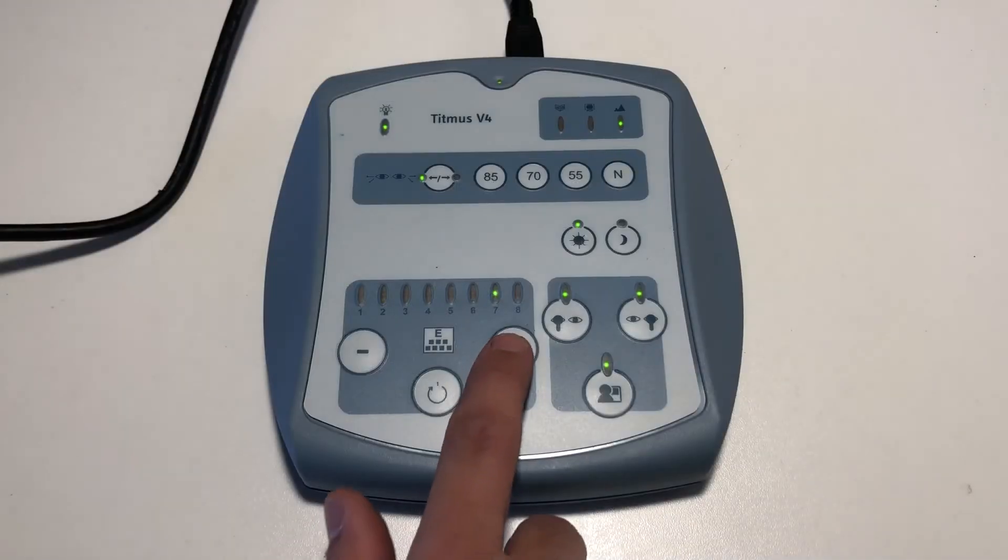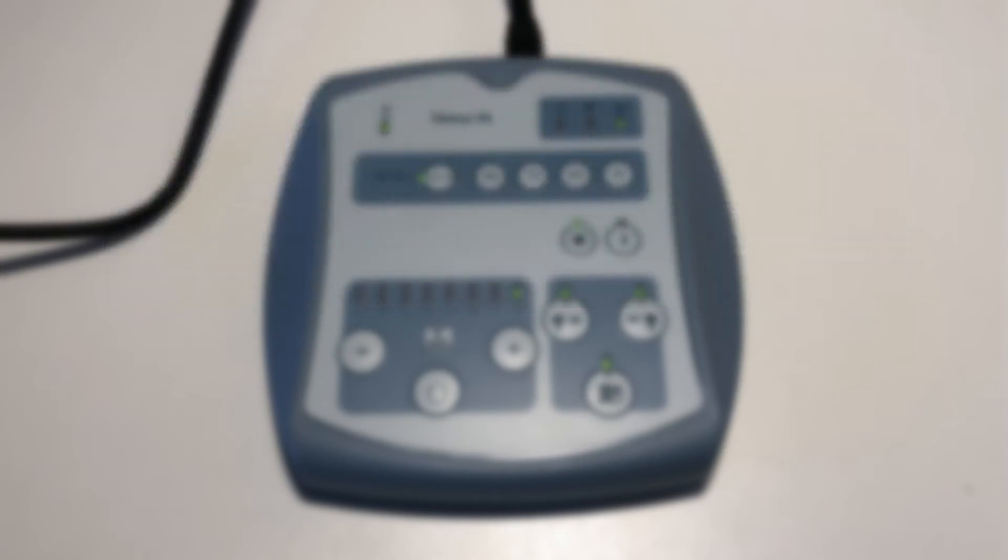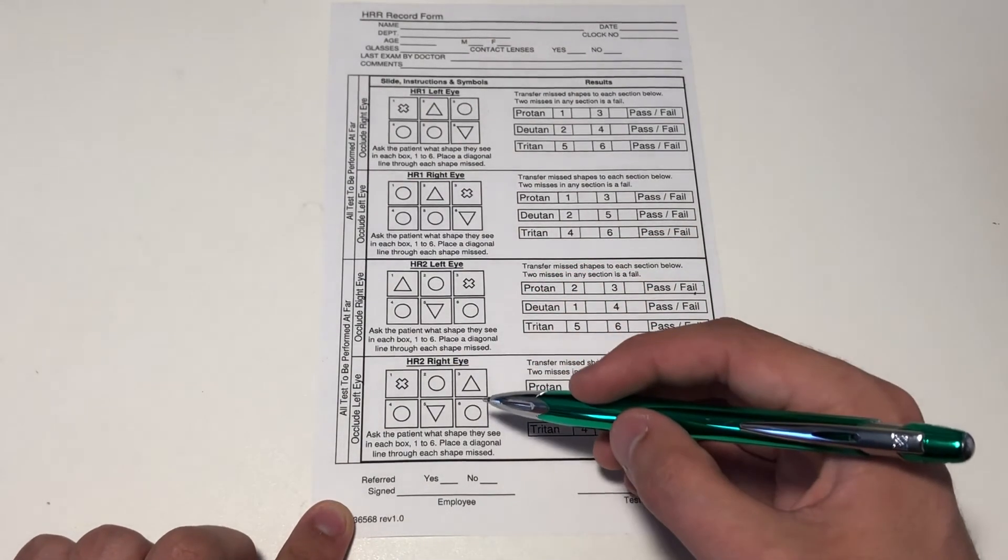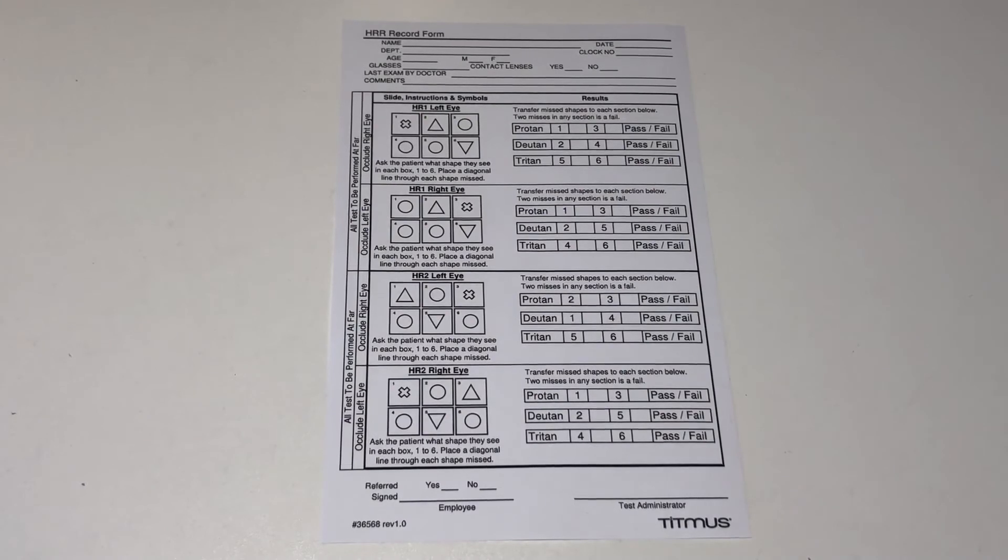Advance to slide number eight. The procedure for slide number eight is the same as for slide number seven. Record the results for the left and right eyes in the corresponding HR2 boxes. After recording all the data, move each incorrectly identified shape into the corresponding box to the right.